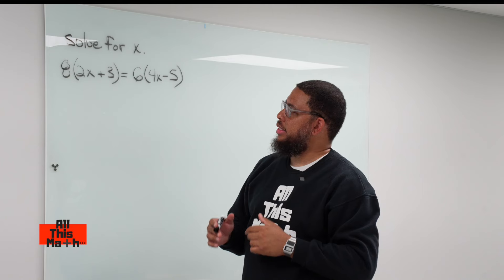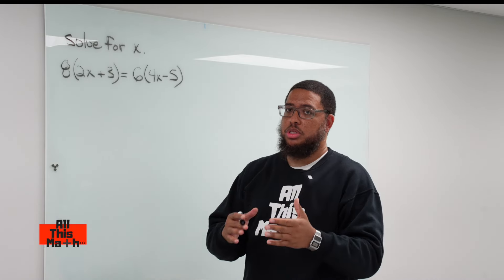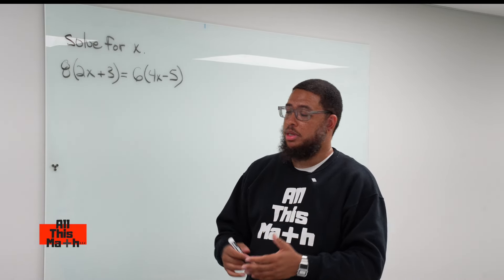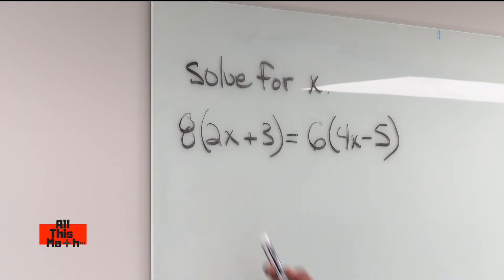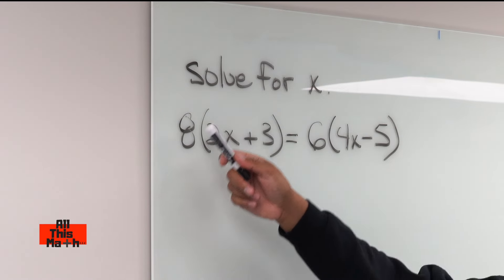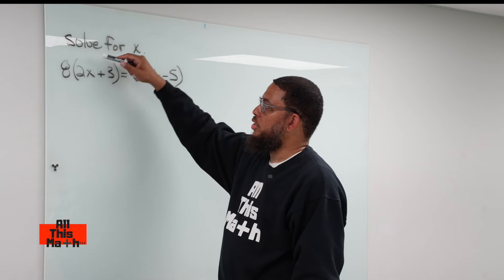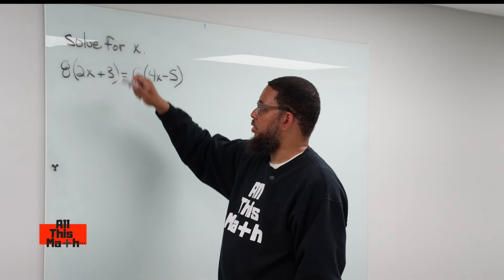Now, when we see parentheses, typically we want to get rid of the parentheses. How do we get rid of the parentheses? By using the distributive property. What is the distributive property? That's when we take the number that's outside the parentheses, or next to the parentheses, and we multiply that number by everything inside the parentheses. Make sure you multiply by everything. Some people often forget to multiply by the second number in the parentheses.